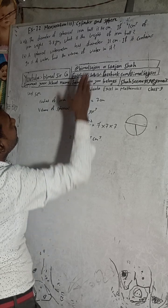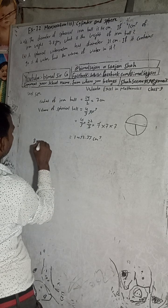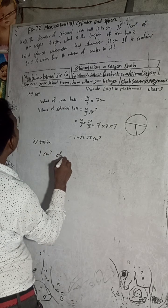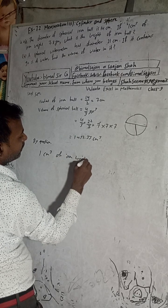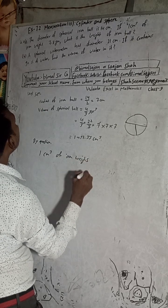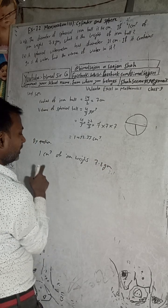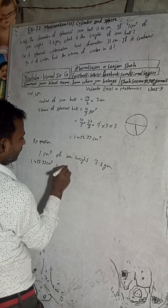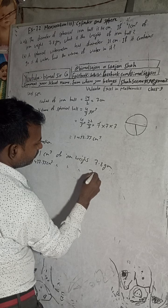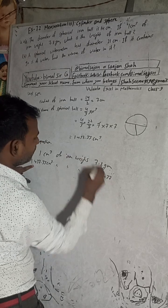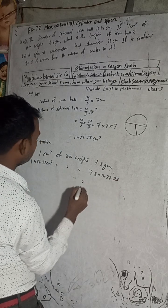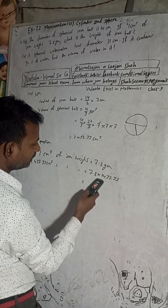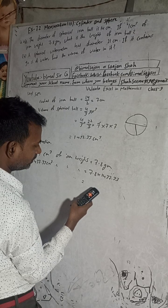Now, given by the question: 1 cm cube of iron weighs 7.8 grams. By the unitary method, 1437.33 cm³ of iron weighs 7.8 multiplied by 1437.33 grams.